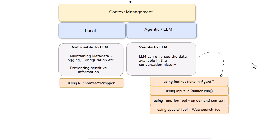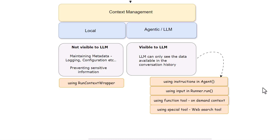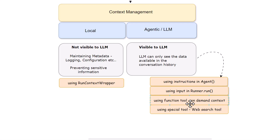If you want certain information to be part of LLM context, there are options available under the OpenAI agent SDK. We can pass information in the form of instructions, as seen in earlier videos. We can also pass it as input under runner.run, which is where we pass our query and that is also going to be visible to LLM. Another option is using a function tool, which provides on-demand context.